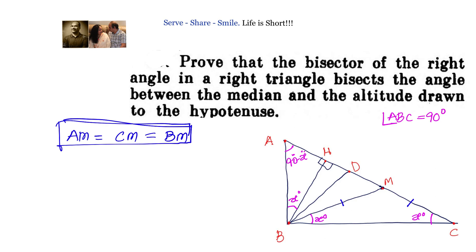BD is the right angle bisector, which means it divides angle B — 90 degrees — into two equal parts. So angle ABD equals angle CBD equals 90 divided by 2, which equals 45 degrees.